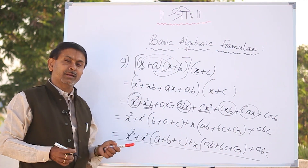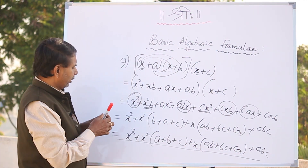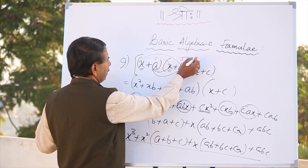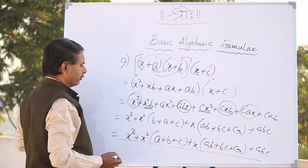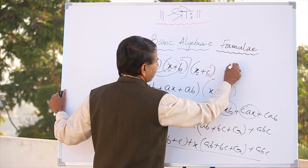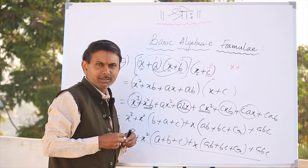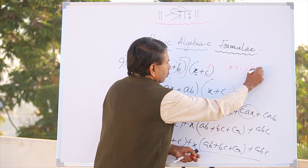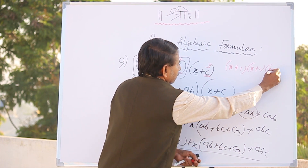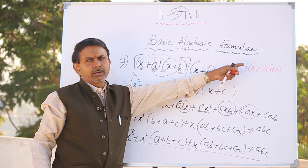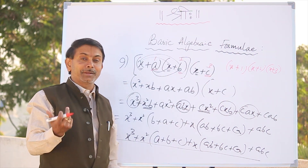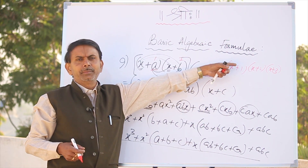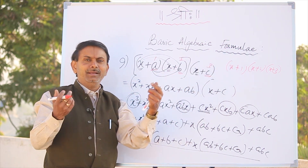How do you do the formula in the exam? What do you do? 1, 2, 3 — How do you do the formula? X plus 1 into X plus 2 into X plus 3. How do you do the formula? A equals 1, B equals 2, C equals 3.